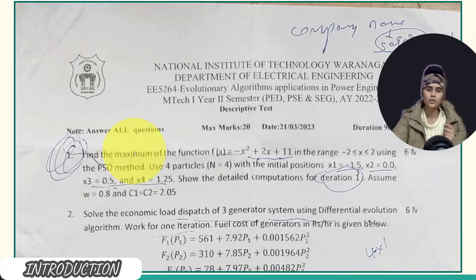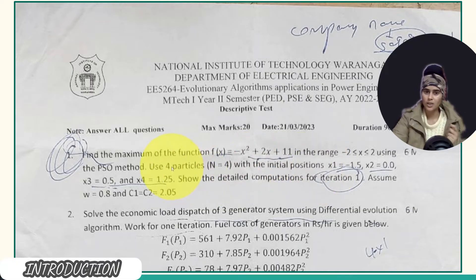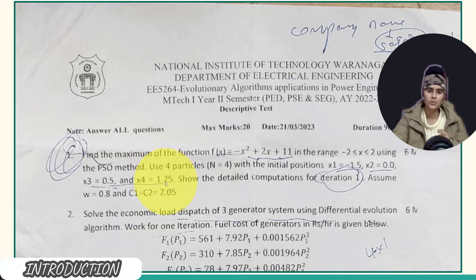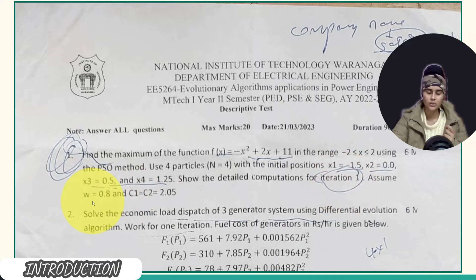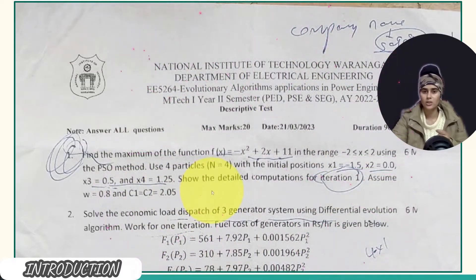We will use PSO method to find the maximum value for this function using four particles. For simplicity, n = 4, with initial positions: x1 = -1.5, x2 = 0.0, x3 = 0.5, x4 = 1.25. For one iteration we will do the calculation. Weight inertia value is 0.8, coefficients c1 and c2 are both 2.05.